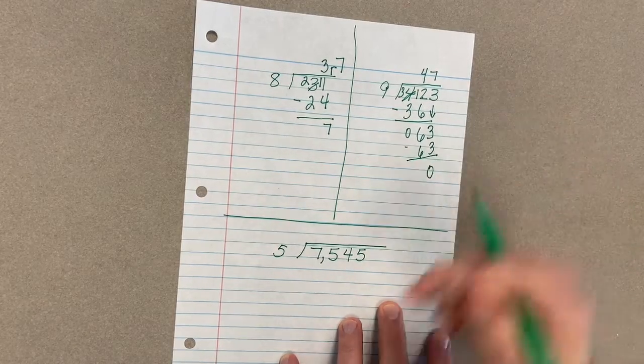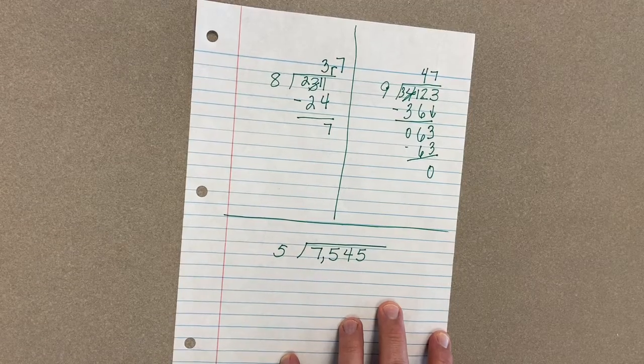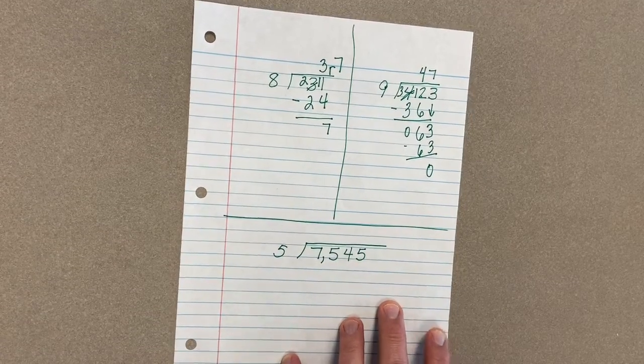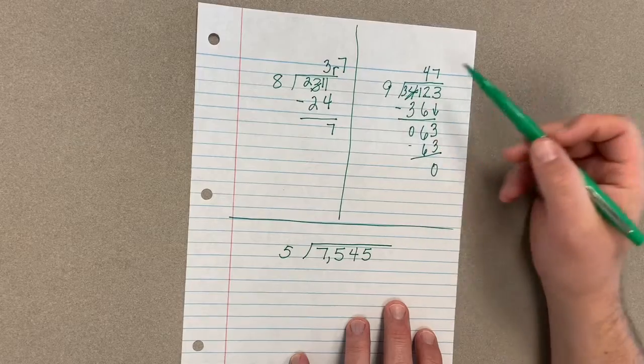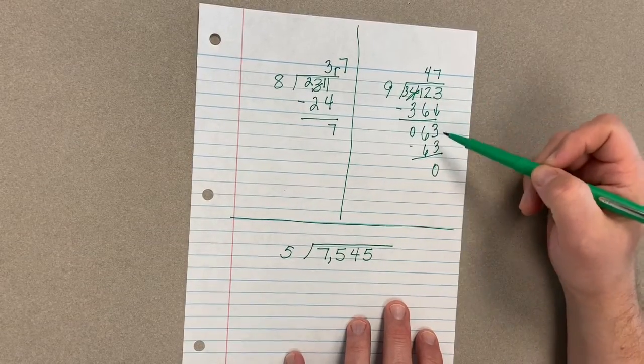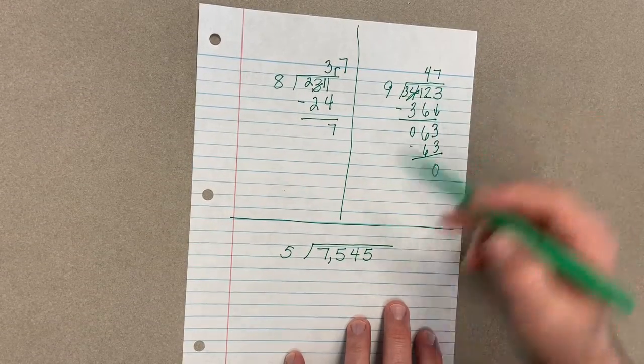Subtract that out and we get a remainder of 0. If you want to check these guys, you can take your 47 and multiply by 9, and that should give you 423.